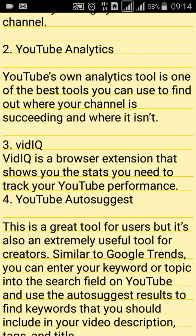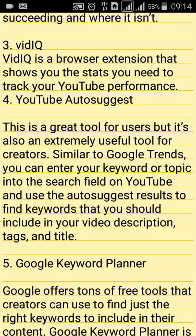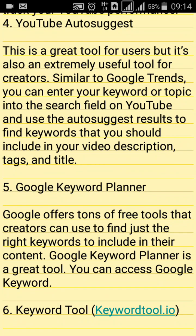The fourth and most important tool is the YouTube Auto-Suggest tool. This is a great tool for users, but it is also an extremely useful tool for creators. Similarly to Google Trends, you can enter your keyword or topic into the search field on YouTube and use the auto-suggest results to find keywords you should include in your video description, tags, and title.